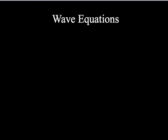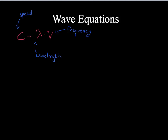Now we need some equations. The first one is called the wave equation, which says that C, the speed of light, is equal to the wavelength — symbolized with lambda — times the frequency, symbolized with an italic V. C is always a constant: 3.0 times 10 to the eighth, so that'll never be a concern. All you really have to solve for is either wavelength or frequency. Wavelength has to be in meters.